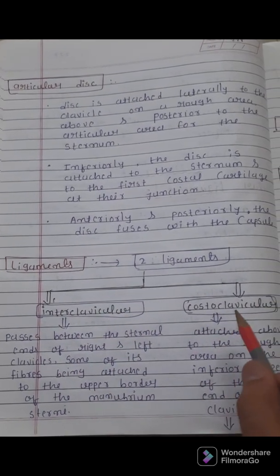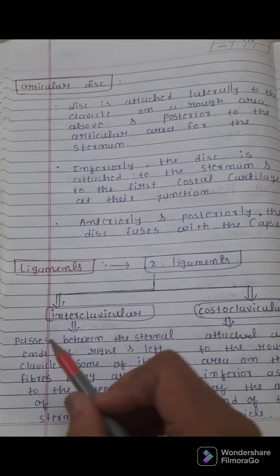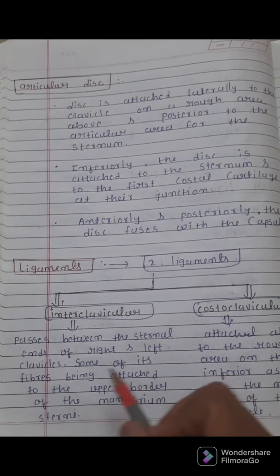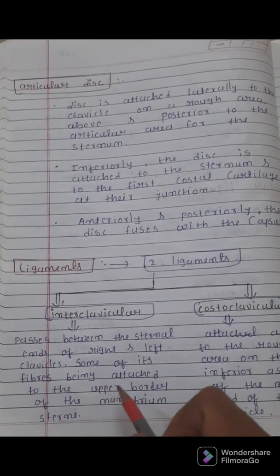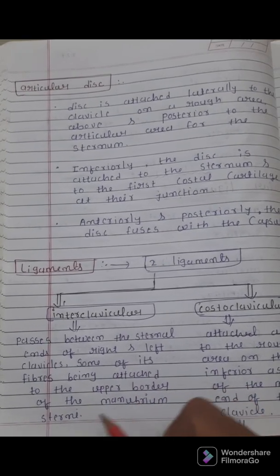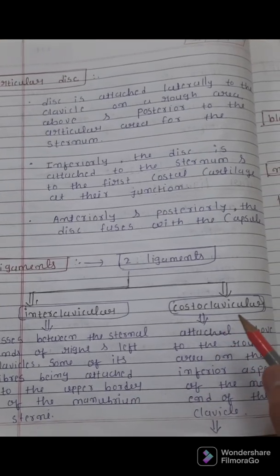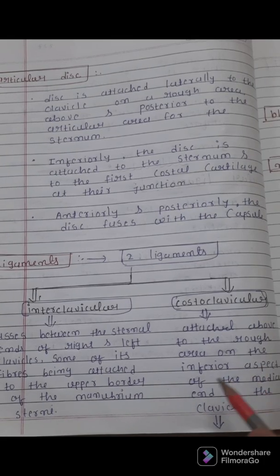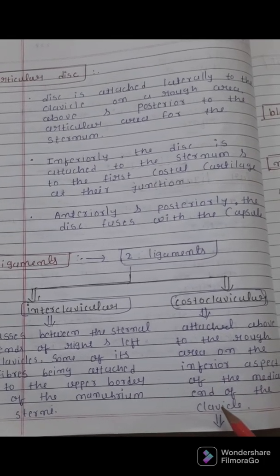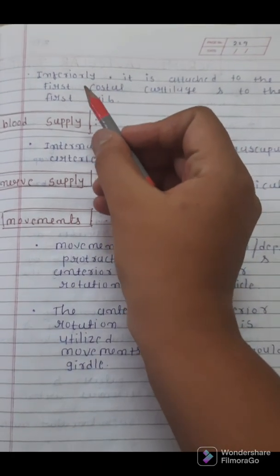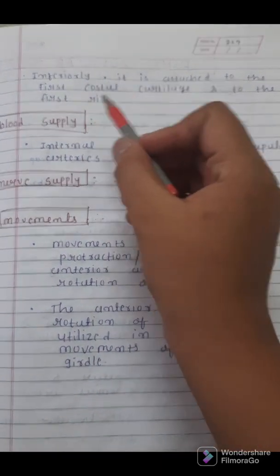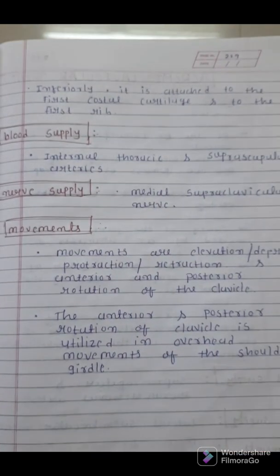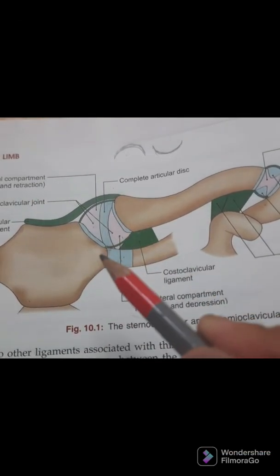There are two ligaments: the interclavicular and the costoclavicular. The interclavicular ligament passes between the sternal end of the right and left clavicle, with some fibers attached to the upper border of the manubrium sterni. The costoclavicular ligament is attached above to the rough area on the inferior aspect of the medial end of the clavicle, and inferiorly it is attached to the first costal cartilage and to the first rib.